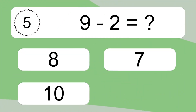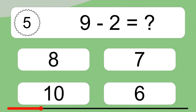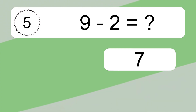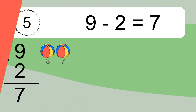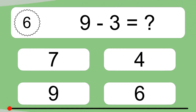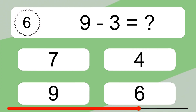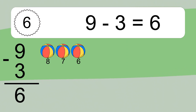9 minus 2 equals what? 9 minus 2 equals 7. Let's count it. 8, 7. 9 minus 3 equals what? 9 minus 3 equals 6. Let's count it. 8, 7, 6.